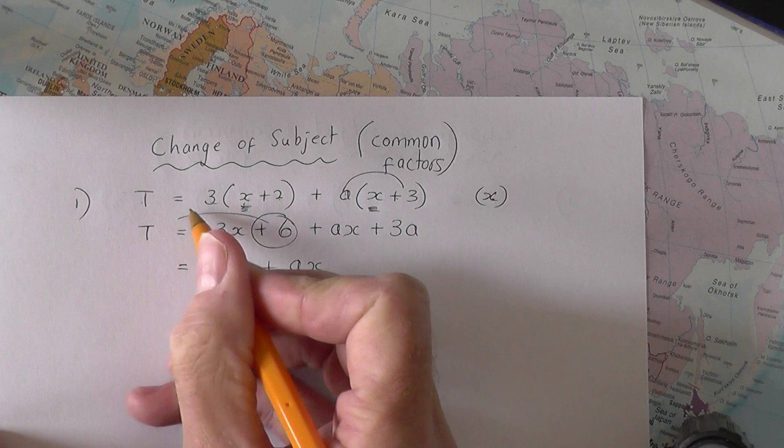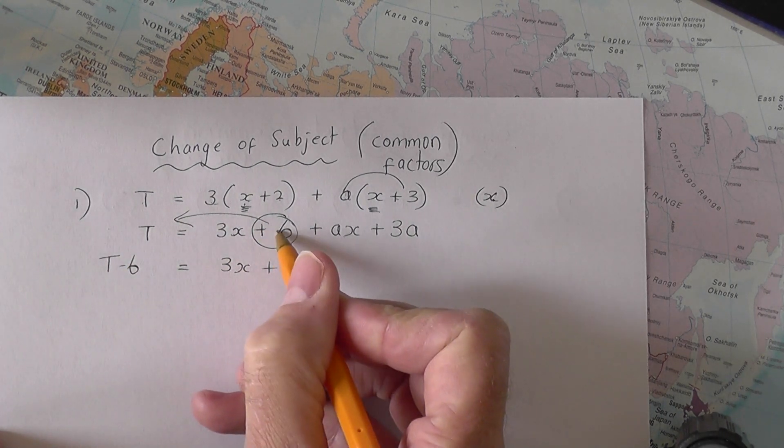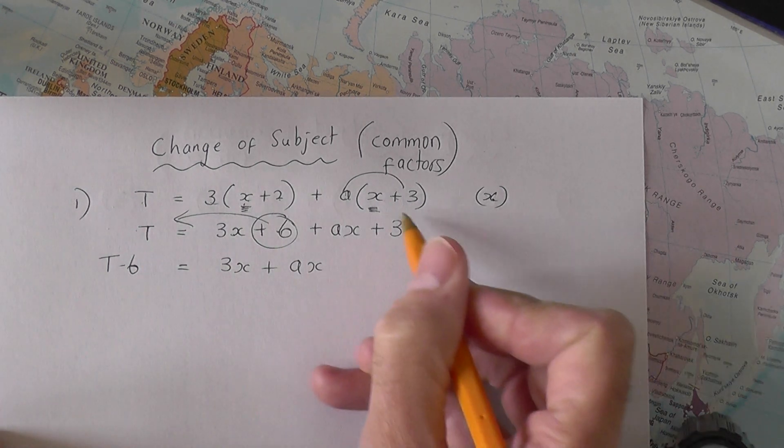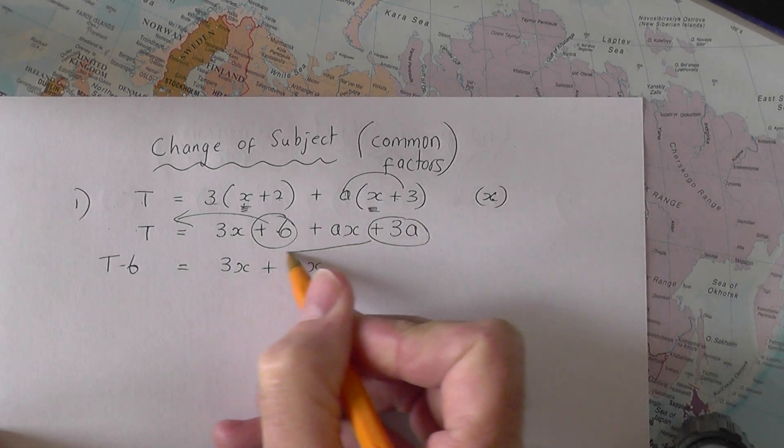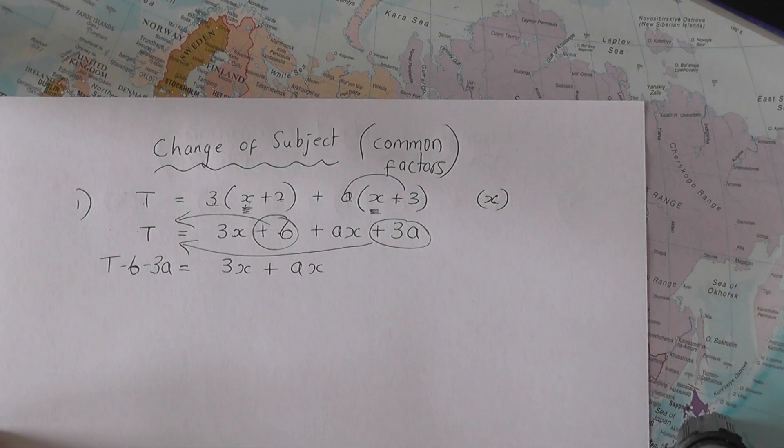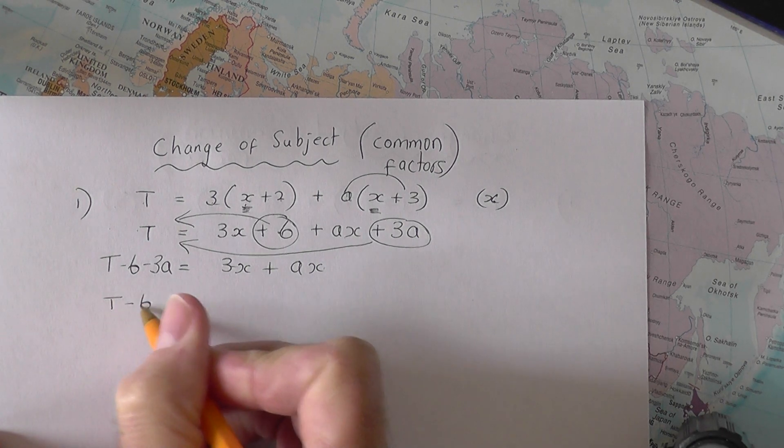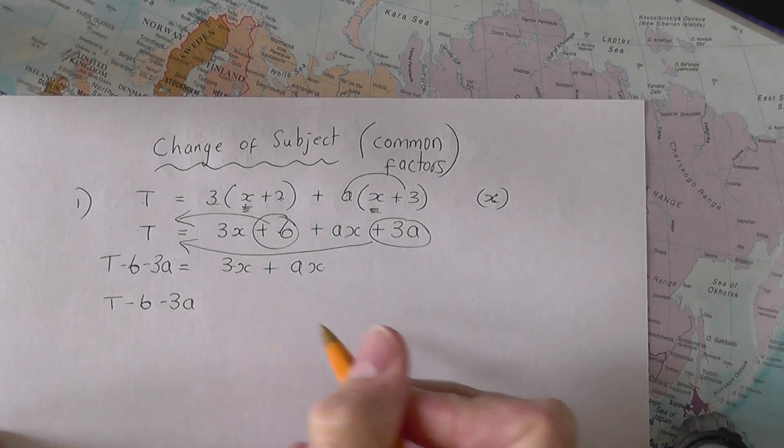And the plus six goes to the other side. So we end up with T minus six because the plus six becomes a minus. And the plus three A is also dragged to the other side. So it becomes minus three A. So you can see now I've got the X's on the right hand side. So I'll leave the T minus six minus three A where it is on the left.